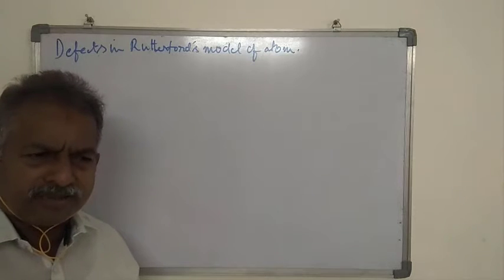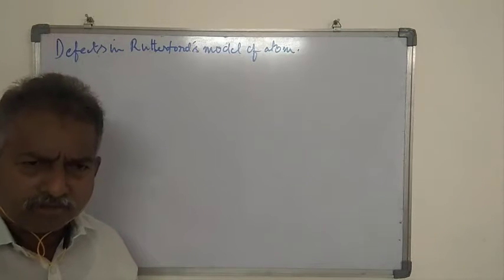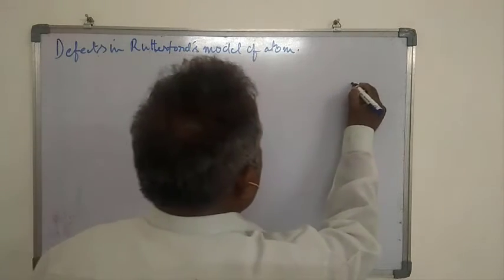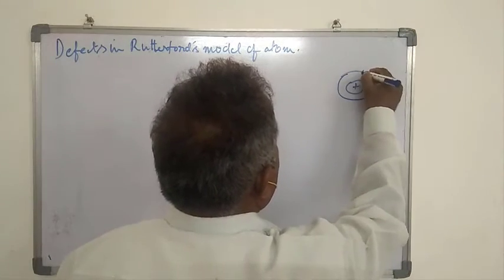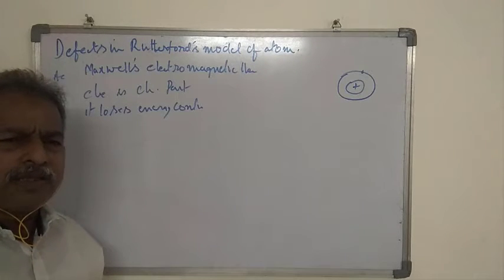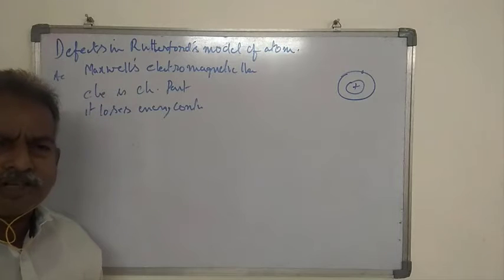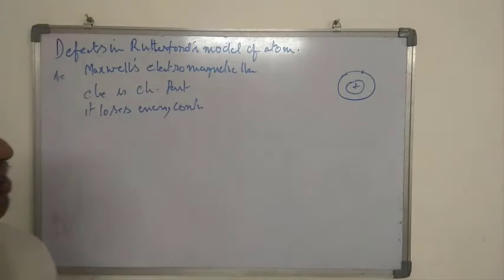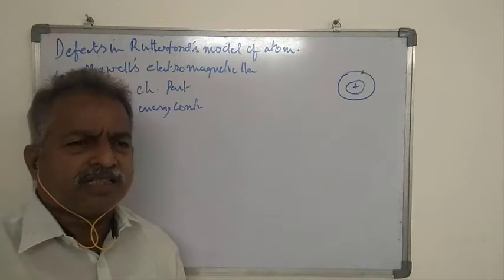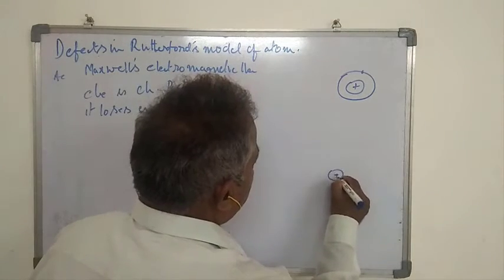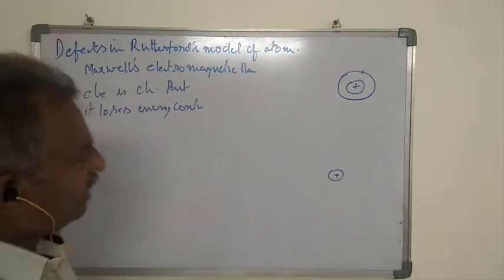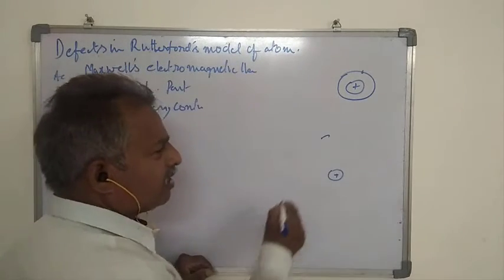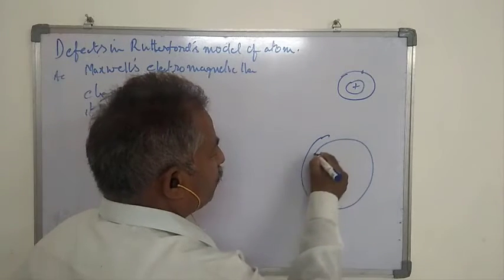Rutherford stated that electrons revolve around the nucleus like planets revolve around the sun. As per Clark Maxwell's electromagnetic theory, if a charged particle revolves around a fixed point, then it loses its energy continuously. We know that nucleus has positive charge and electron has negative charge. So as electron revolves around the nucleus continuously, as per electromagnetic theory, electron loses its energy continuously. As it loses energy, it falls within the attractive force of the nucleus.